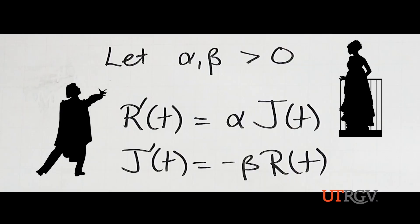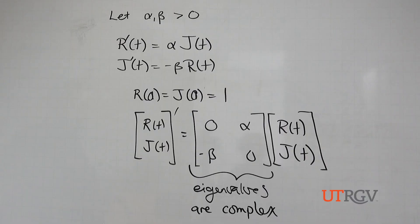The rate of Romeo's love is proportional to the amount of Juliet's affection. And Juliet's rate of change of affection is negatively proportional to Romeo's. Remember, an equation is just a mathematical way of looking at a relationship. This is a differential equation — a differential equation relates a rate of change with something else.